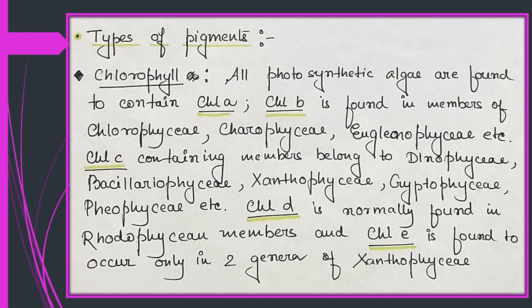There are normally four broad types of pigments studied from various members of algae. Among them, the most widely studied is chlorophyll — five different types: chlorophyll a, b, c, d, and e — all found in different groups of algae. Chlorophyll a is present in all photosynthetic algae. Chlorophyll b is found in members of Chlorophyceae, Charophyceae, and Euglenophyceae. Chlorophyll c is found in Dinophyceae, Bacillariophyceae, Xanthophyceae, Cryptophyceae, Phaeophyceae, and several other groups.